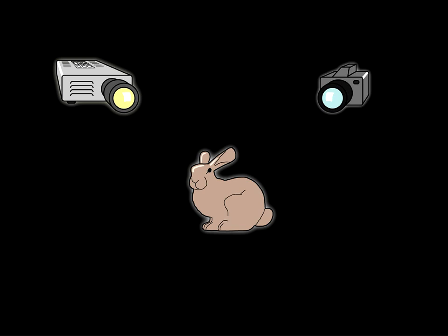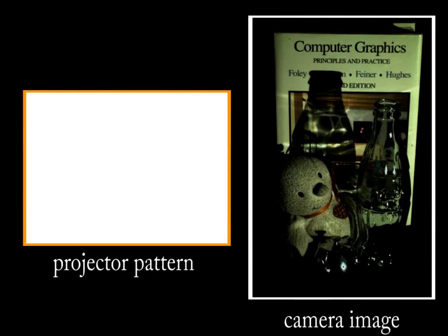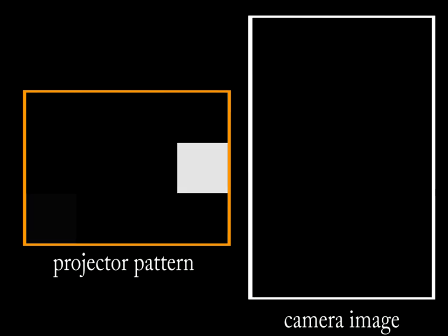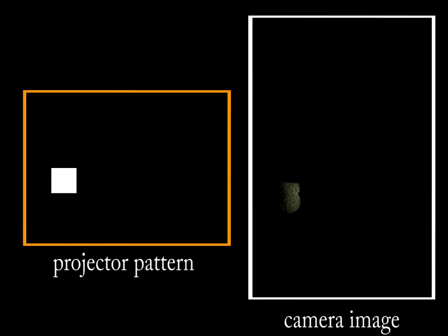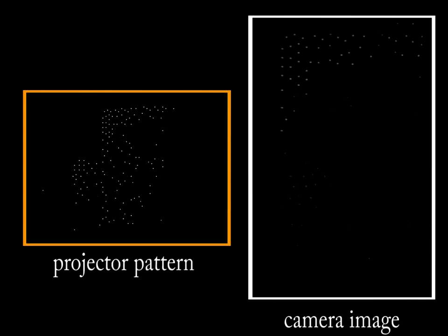Replacing the photosensor with a camera allows us to capture the four-dimensional transport between the pixels of the projector and the pixels in the camera. However, scanning the projector pixel by pixel is very slow, since there are millions of pixels in a standard projector. To accelerate this process, we must identify pixels whose contributions onto the scene can be later separated and illuminate them in parallel. Our adaptive algorithm subdivides the projector image recursively to determine which pixels can be lit simultaneously. This allows us to capture the transport between a projector and camera significantly faster than with the brute force scan.